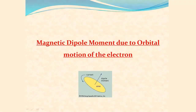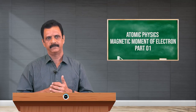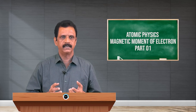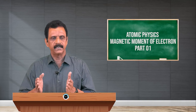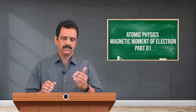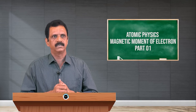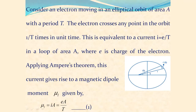Magnetic moment or magnetic dipole moment due to the orbital motion of the electron: each electron which keeps revolving around the nucleus in a circular orbit and keeps spinning about its own axis develops a magnetic property and can be treated as a small tiny magnet. Now, let us consider an electron moving in an elliptical orbit of area A with period T, that is the time taken by the electron to complete one rotation.